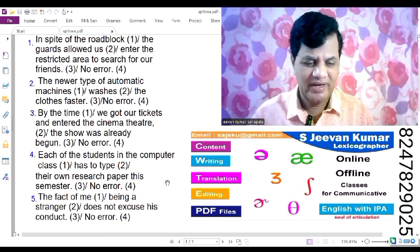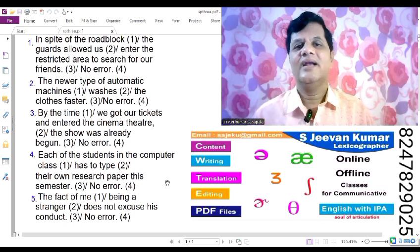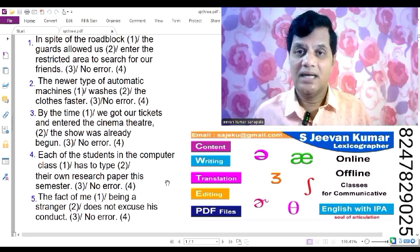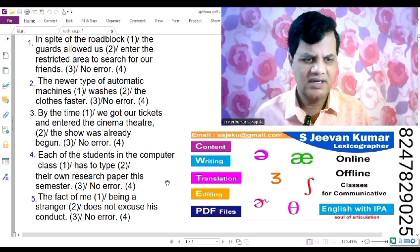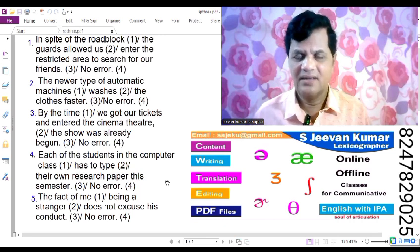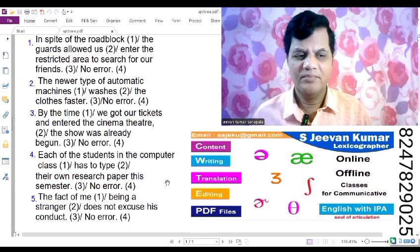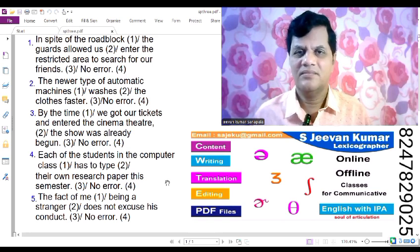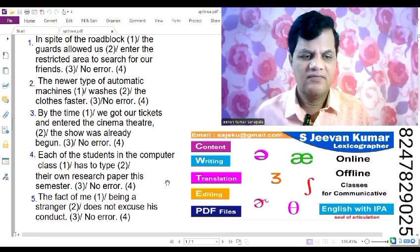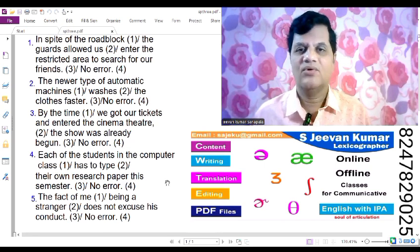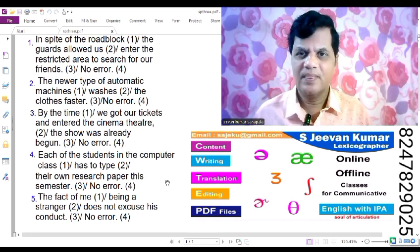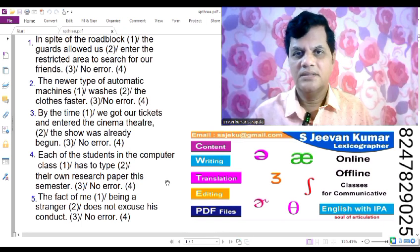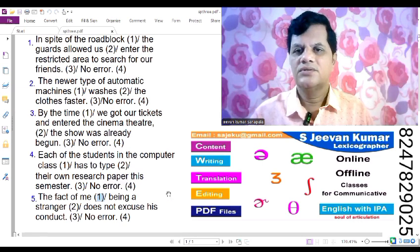The fact of me being a stranger does not excuse his conduct. The error is in part one - the fact of me. It should be the fact of my being a stranger does not excuse his conduct.